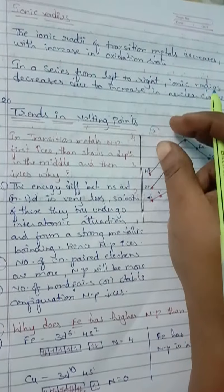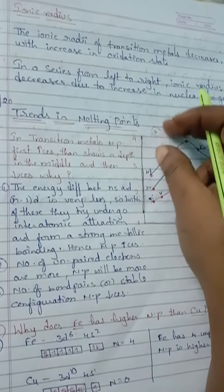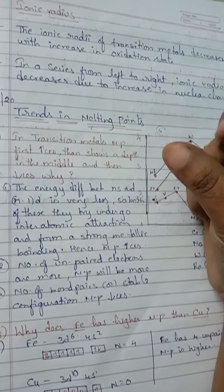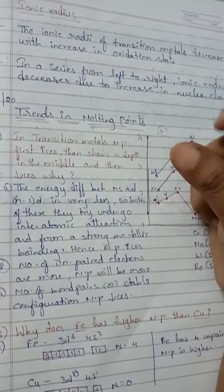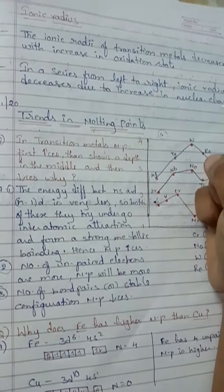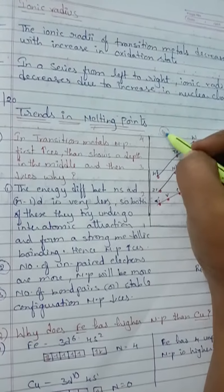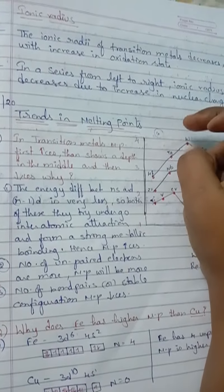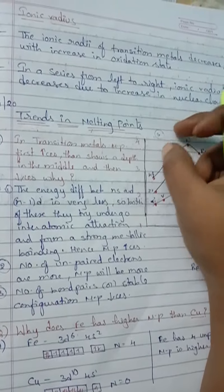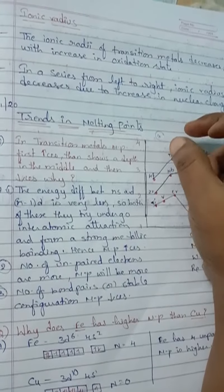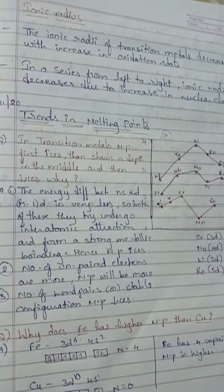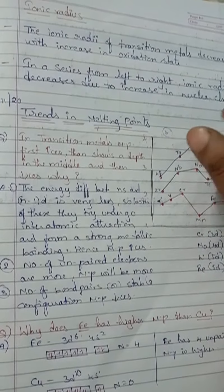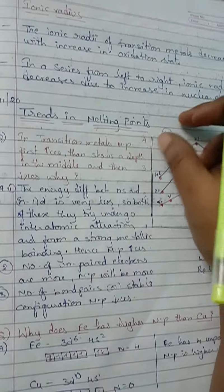When this inter-atomic attraction happens, the atoms are going to form a strong metallic bond.